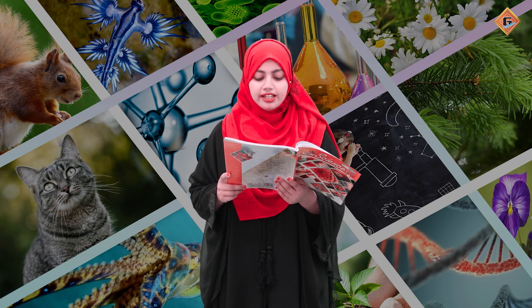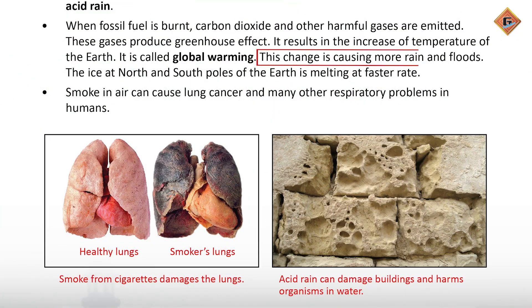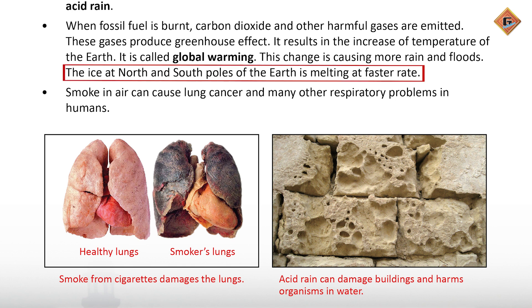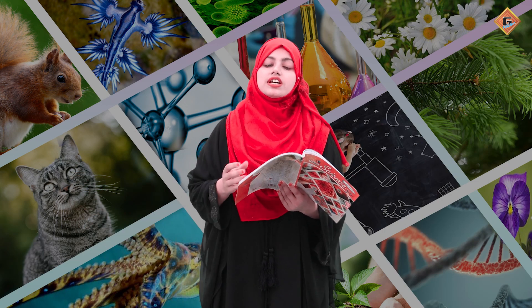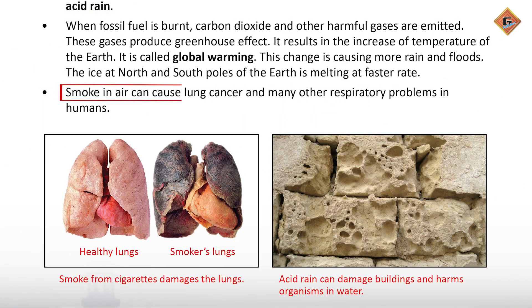Ab main aapko bataati hoon ke rains aur floods kyun aate hain. Jab hamare north aur south pole of earth pe ice melt karti hai, tab woh rain aur flood ki soorat mein change ho jaati hai, jis ki wajah se duniya ki different countries mein flood aata hai. Isi tarah hamaara jo smoke hai woh lung cancer cause karta hai — dhuan agar hum inhale karte hain toh usse hamare lungs damage ho jaate hain aur cancer ho sakta hai jo ke bahut khatarnak hai.